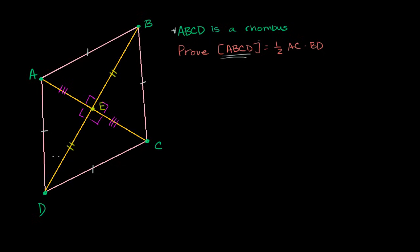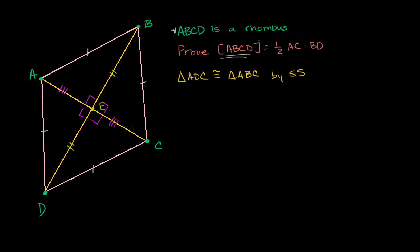The easiest way to think about it is: if we can show that triangle ADC is congruent to triangle ABC, and if we can figure out the area of one of them, we can just double it. We can see that triangle ADC is congruent to triangle ABC by side-side-side congruency — this side is congruent to that side, this side is congruent to that side, and they both share AC.